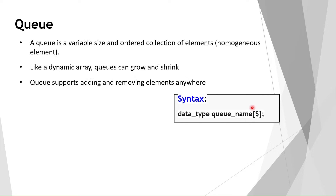The syntax to write a queue is the same as a single-dimensional unpacked array. A packed array has its dimension before the variable name, while an unpacked array has its dimension after the variable name. For a queue, we give the data type, then the queue name, and in square brackets we use the dollar symbol — the dollar represents the size of the queue.